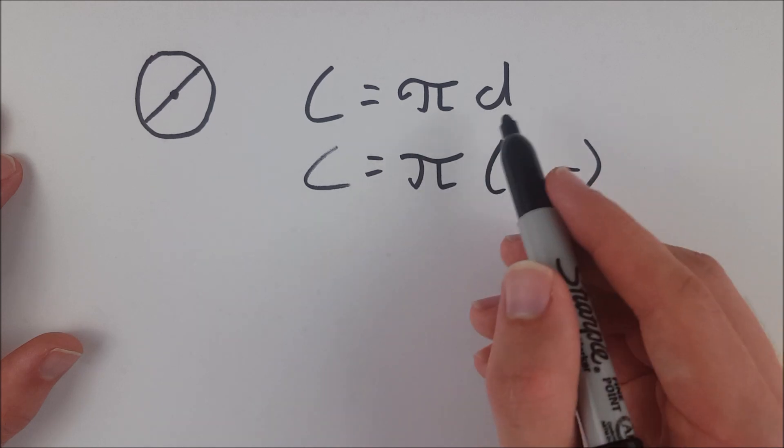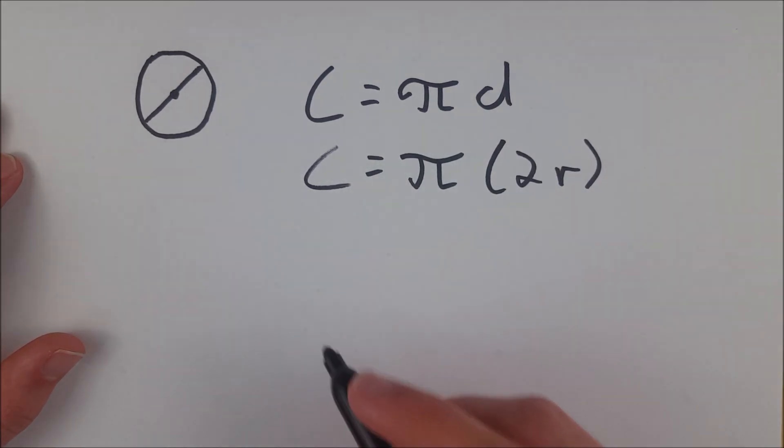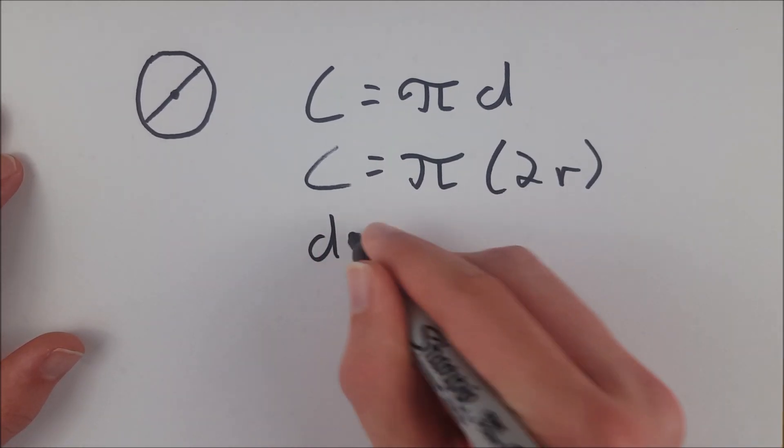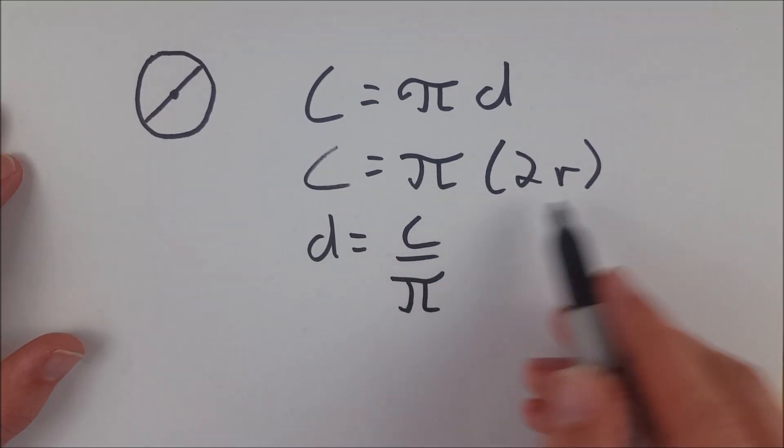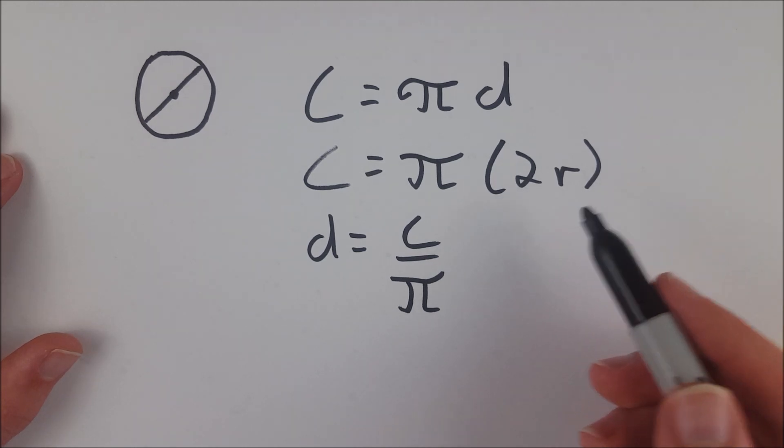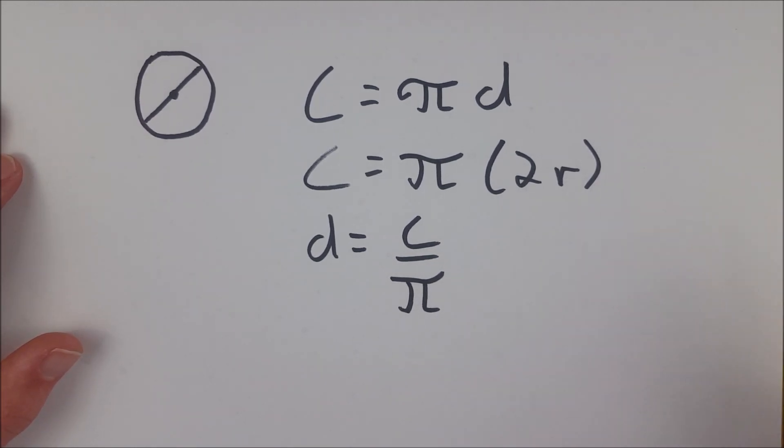we can easily solve for our diameter by dividing both sides by π. So we get d = C/π. If we solve this case, we would end up getting a formula for radius, but that's not really what we're interested in right now. If you can solve for diameter, you can solve for radius just by dividing it by 2. So here's our formula.